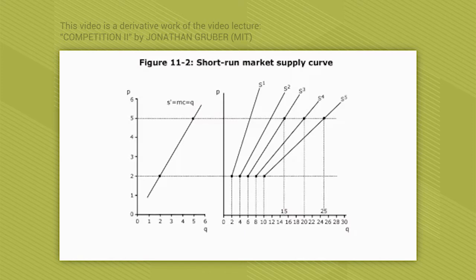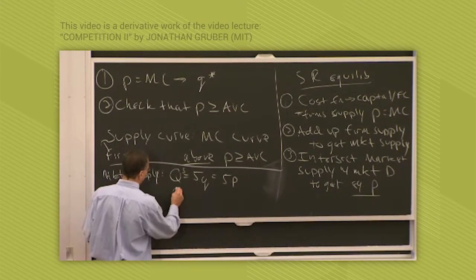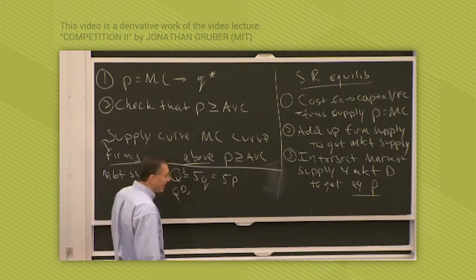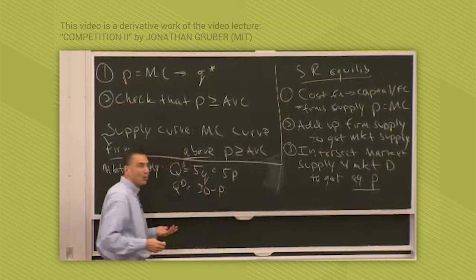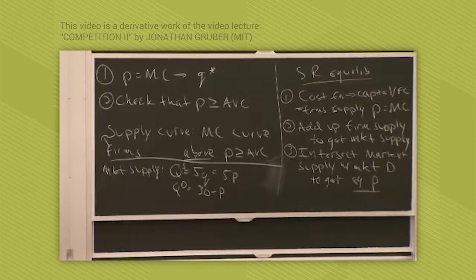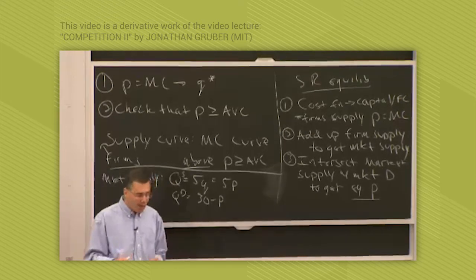You can see that because when the price is 2, Q equals 10. When the price is 5, Q equals 25. So you can see that S super 5 is the market supply curve. Big Q equals 5P. Now let's say the market demand, let's just make this up. So this is the quantity supply. Let's say the demand function is that the quantity demanded is 30 minus P. We have a downward sloping demand curve with a slope of negative 1. The quantity demanded is 30 minus P.